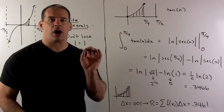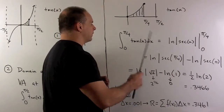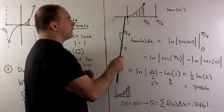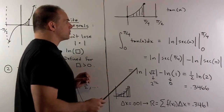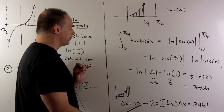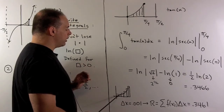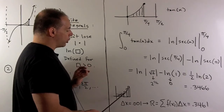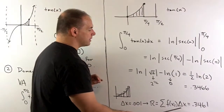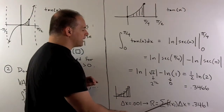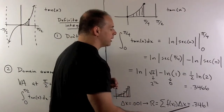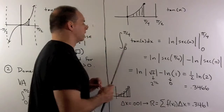Punch that into a calculator, and we get roughly 0.3466. Now of course, we check our answer. We're going to approximate this definite integral using a Riemann sum. We're going to take the region and approximate the area using rectangles. The base for each rectangle will have length 0.001, and we're going to use the height of the rectangle as a point on our graph — that'll be f of some x. So the area of each rectangle is height times base, summed over all the rectangles. Working that out on a computer, I get 0.3461, and we see that's pretty close to the answer we got using the definite integral.